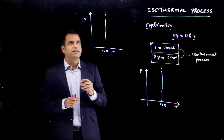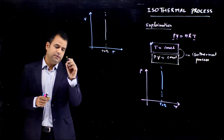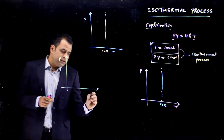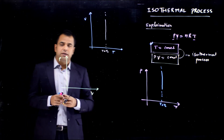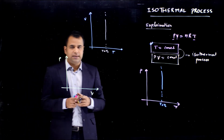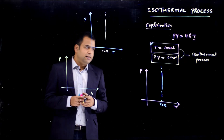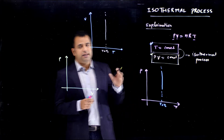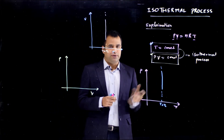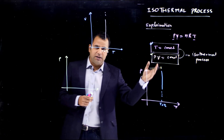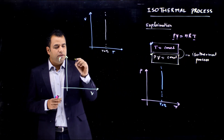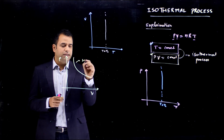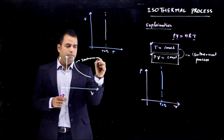Now let us go for the third one, which is the P-V graph, which we generally use. Majority of the time we proceed with P-V. I am putting pressure onto the y-axis and volume onto the x-axis. This equation represents y·x = constant, which is a hyperbola equation. If I represent this equation onto the P-V graph, I will get that kind of graph. This graph represents the isothermal process.